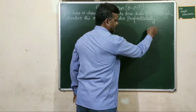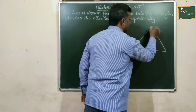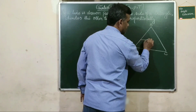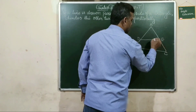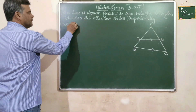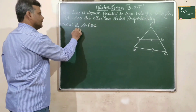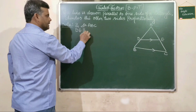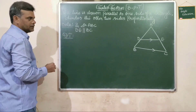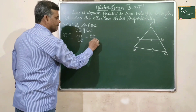Let us start deriving this. ABC is the triangle in which DE is drawn parallel to BC. Given data: in triangle ABC, DE is parallel to BC. To prove: AD by BD equals AE by EC.